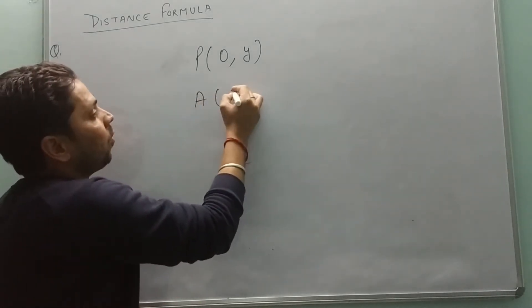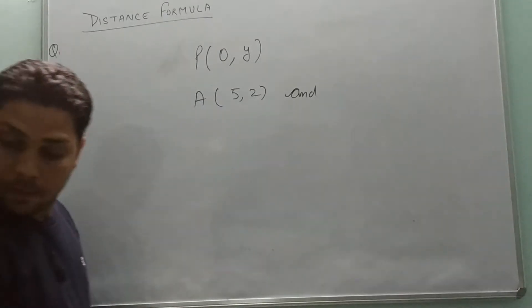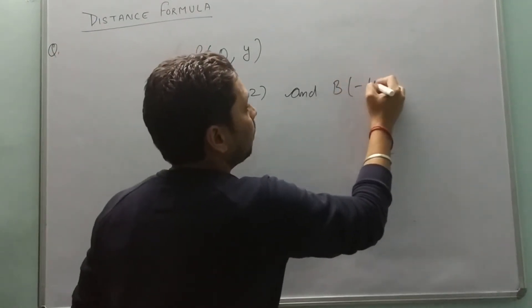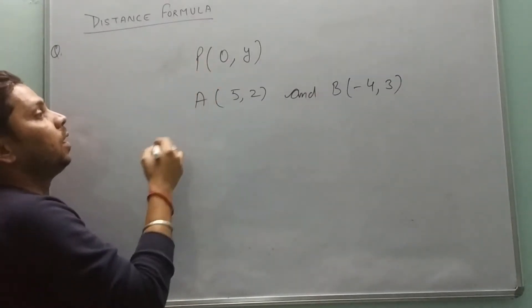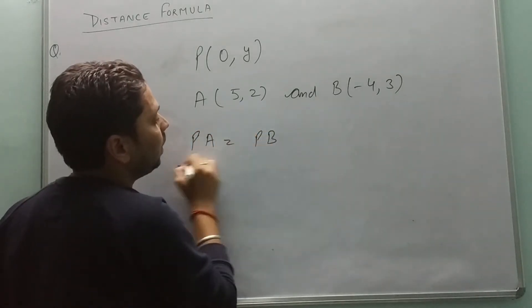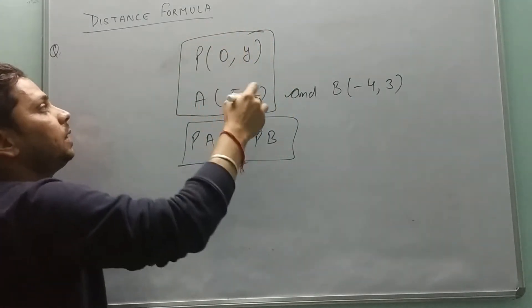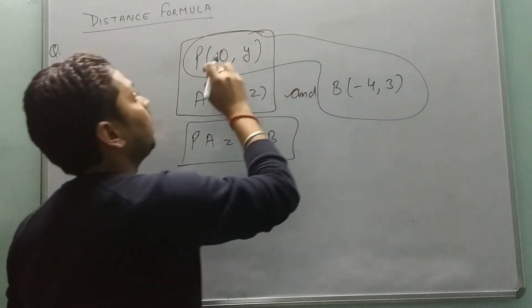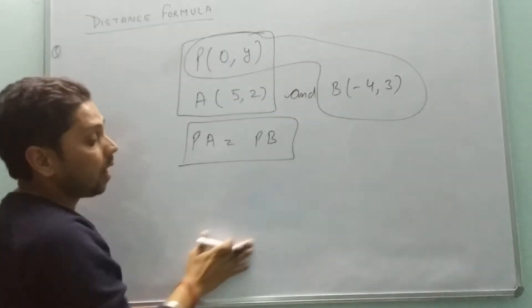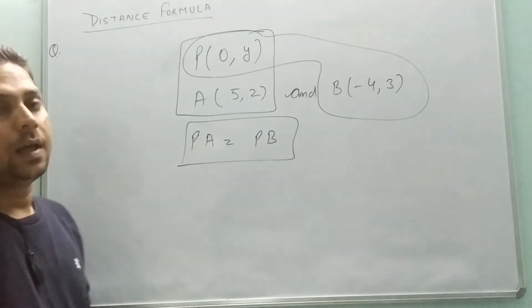Here A is (5, 2) and B is (minus 4, 3). Apply the distance formula with PA equal to PB on both sides. Substitute the values of x1, y1, x2, y2, x3, y3 into the distance formula to get the required answer.